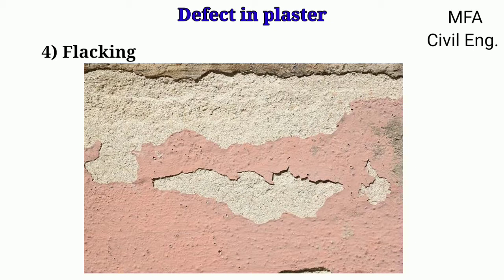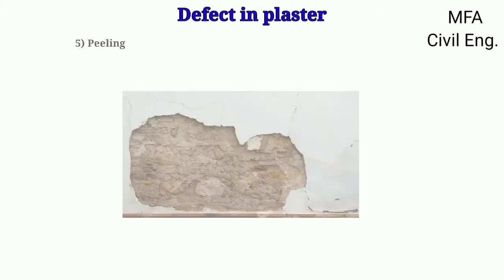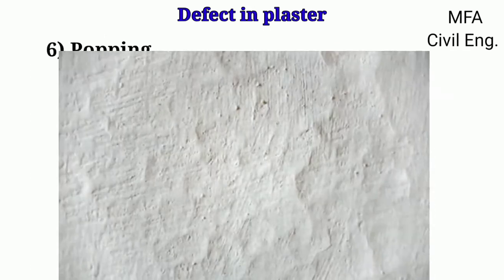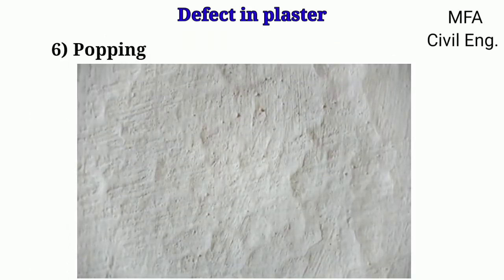Flaking is the formation of a very loose mass on a plastered surface due to poor bond between successive coats. Peeling is the complete dislocation of some portion of the plaster surface, resulting in the formation of a patch.